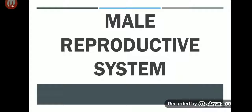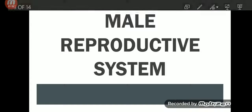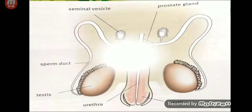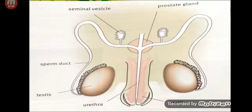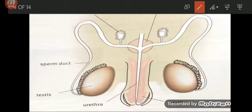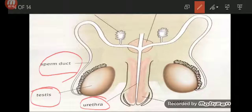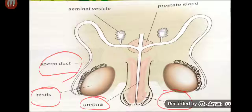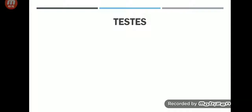Our topic is the human reproductive system. First of all, we will go towards the male reproductive system. This is a very simple picture from your book showing the male reproductive system. It has the urethra, testis, sperm duct, penis, seminal vesicles, and prostate glands. We will study all of them one by one and see their functions.